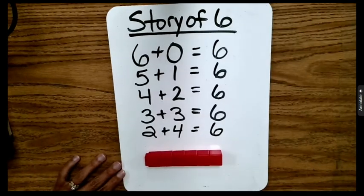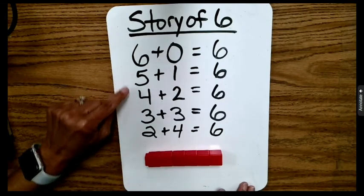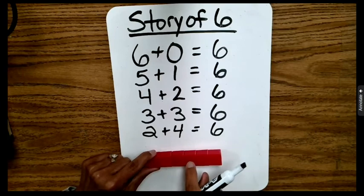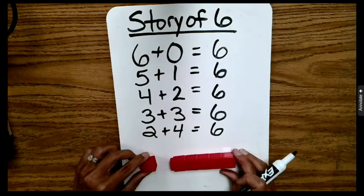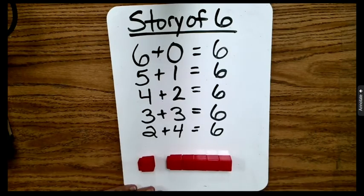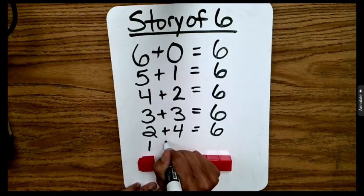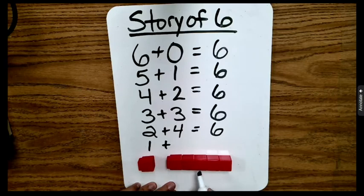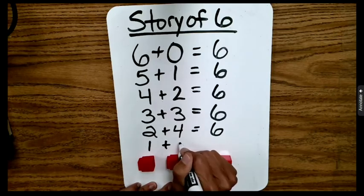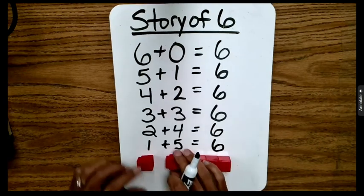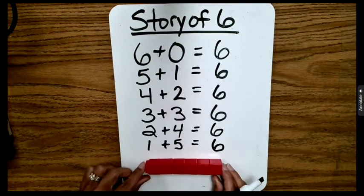Let's keep going. This time, we can break off 5 cubes: 1, 2, 3, 4, 5. And our new number sentence is 1 cube plus 1, 2, 3, 4, 5 cubes gives us a total of 6 cubes.